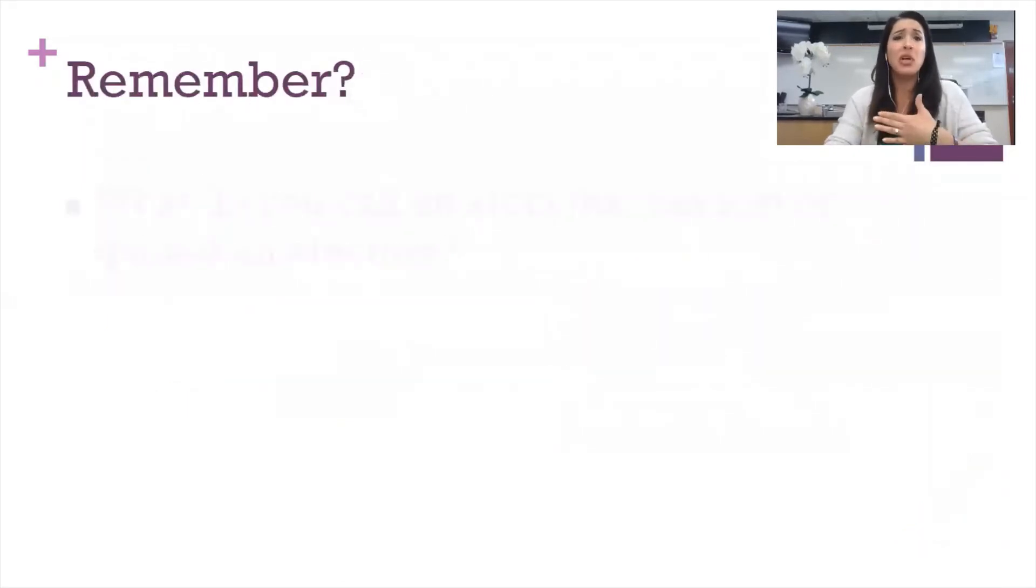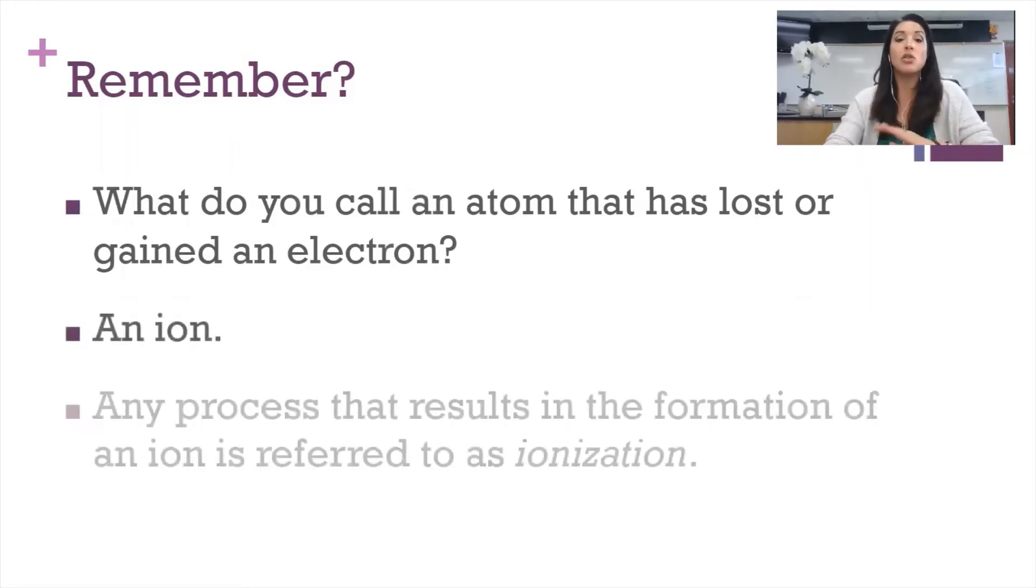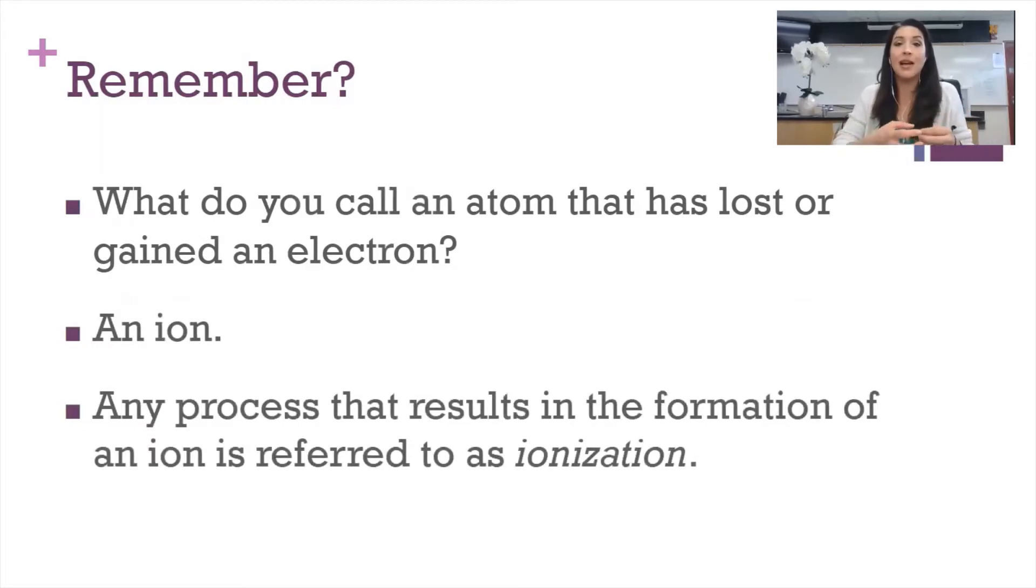So first of all, do you remember what you call it when an atom has an unequal number of protons or electrons? Or maybe an atom loses or gains an electron? Those are examples of ions. So any time we have a process in which an electron is removed from an atom or an electron is gained by an atom, we refer to that as ionization.